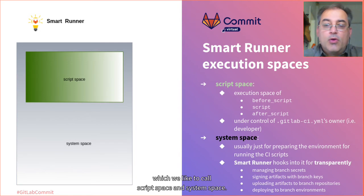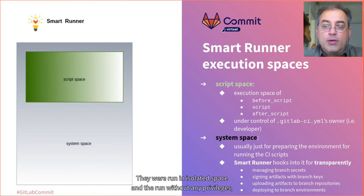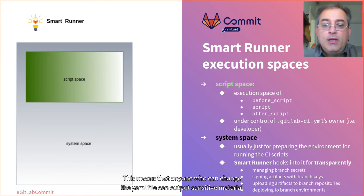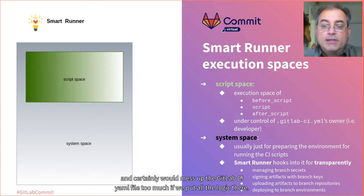The script space is where the scripts written in the .gitlab-ci.yml file are executed. They run in an isolated process space in the runner without any privileges, but are under the control of the author of the gitlab-ci.yaml file. This means anyone who can change this YAML file can output sensitive material like signing keys or authentication tokens to the logs, bypassing GitLab's masking. It is not suited for our design solution and would certainly mess up the gitlab-ci.yaml file too much if we put all the logic there.